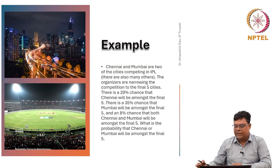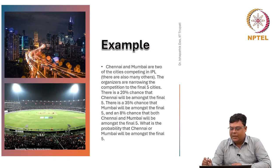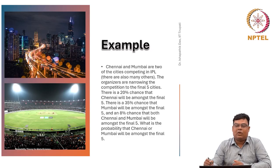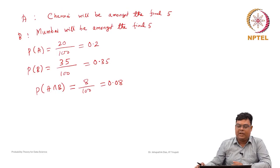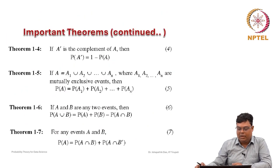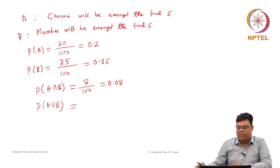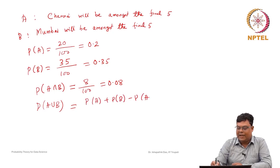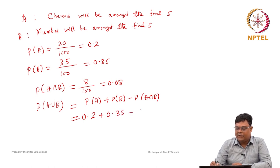The question asks: what is the probability that Chennai or Mumbai will be amongst the final five? Basically it is 'or', so we will find the probability of A union B. We will apply Theorem 1.6. By Theorem 1.6, this is probability of A plus probability of B minus probability of A intersection B.